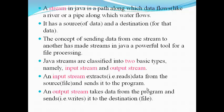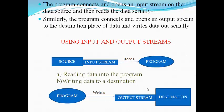Java streams are classified into two basic types: input stream and output stream. An input stream extracts data from the source and sends it to the program. An output stream takes data from the program and sends it to the destination. The program connects and opens an input stream on the data source and then reads the data serially. Similarly, the program connects and opens an output stream to the destination and writes data out serially.